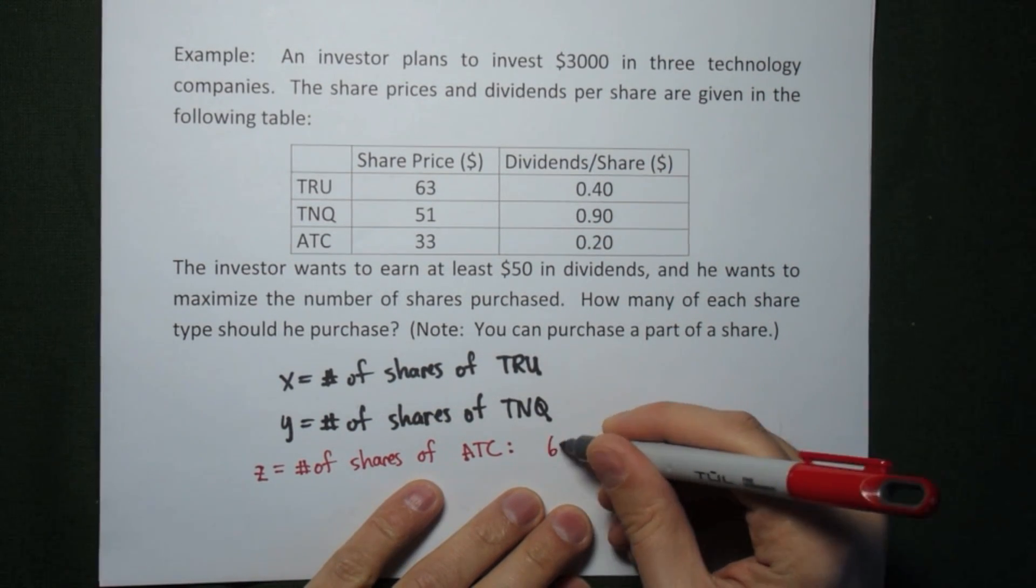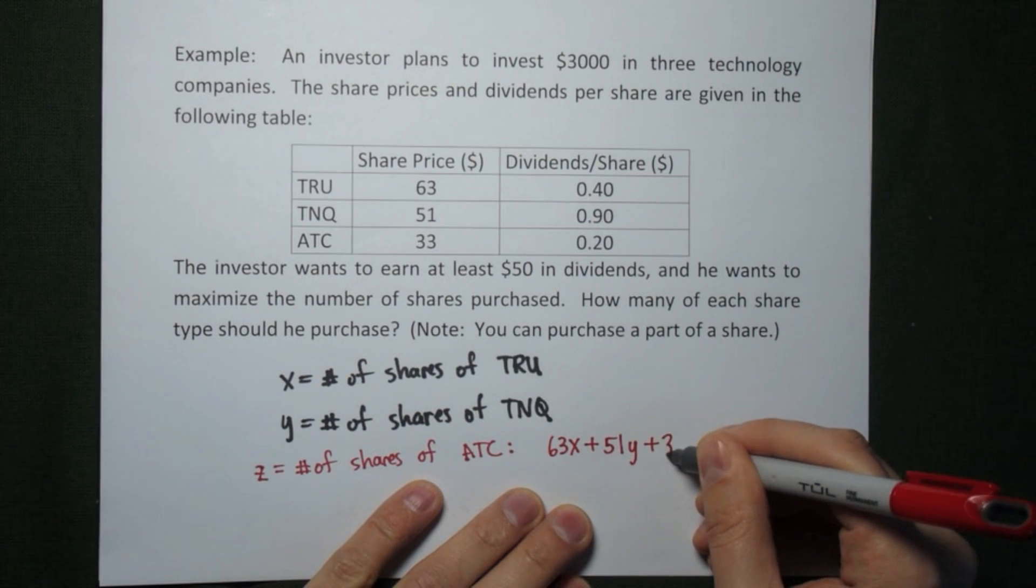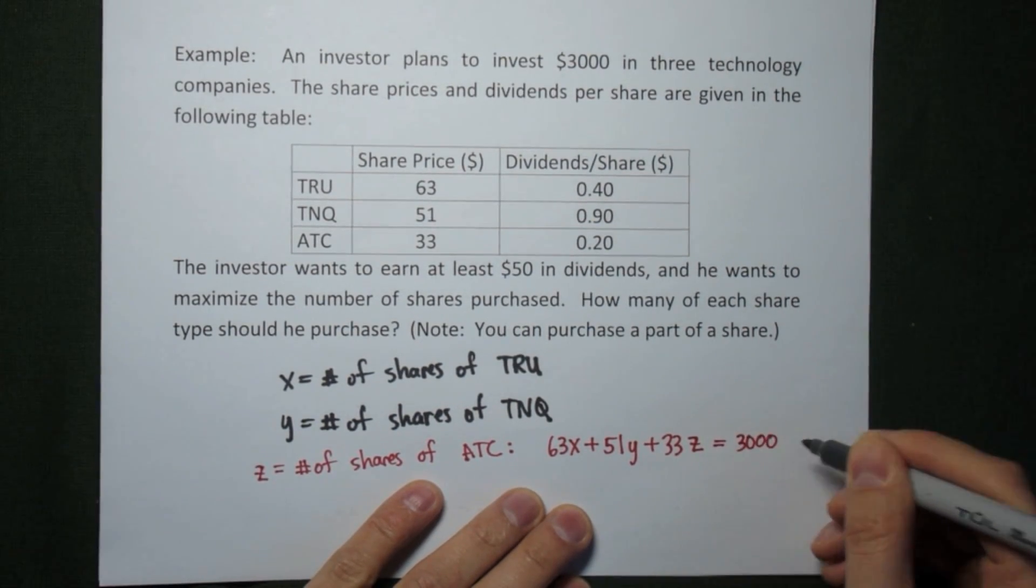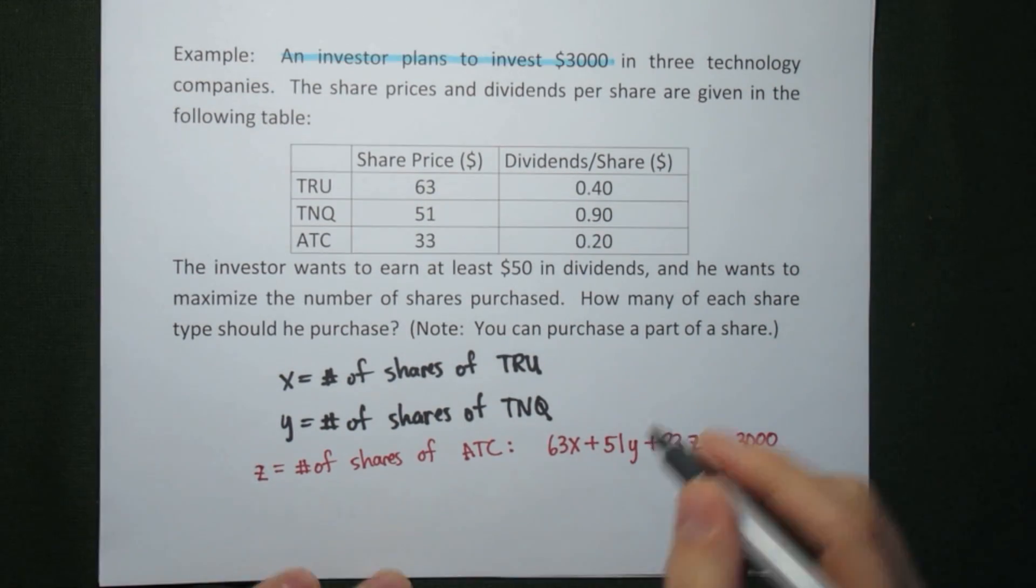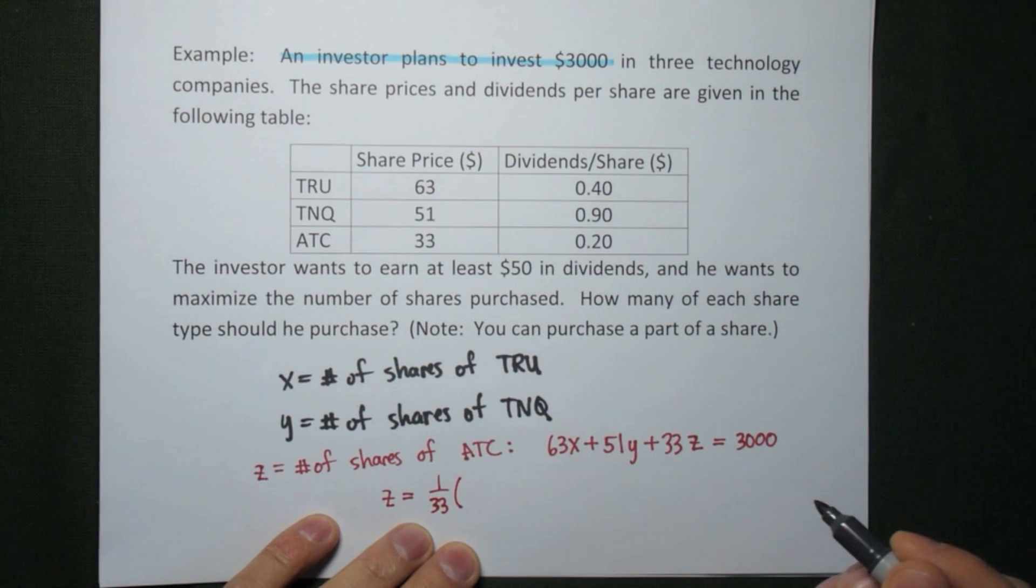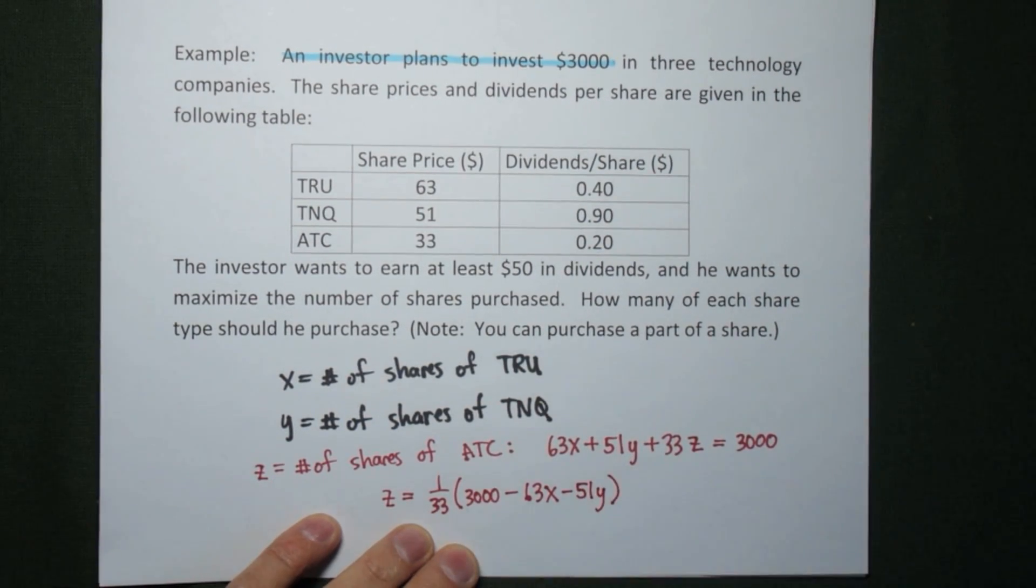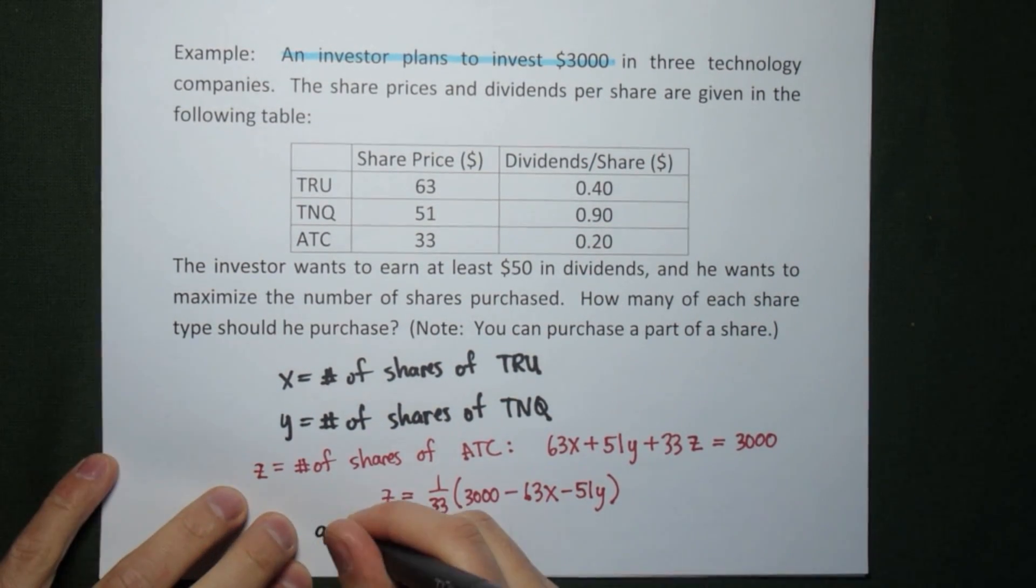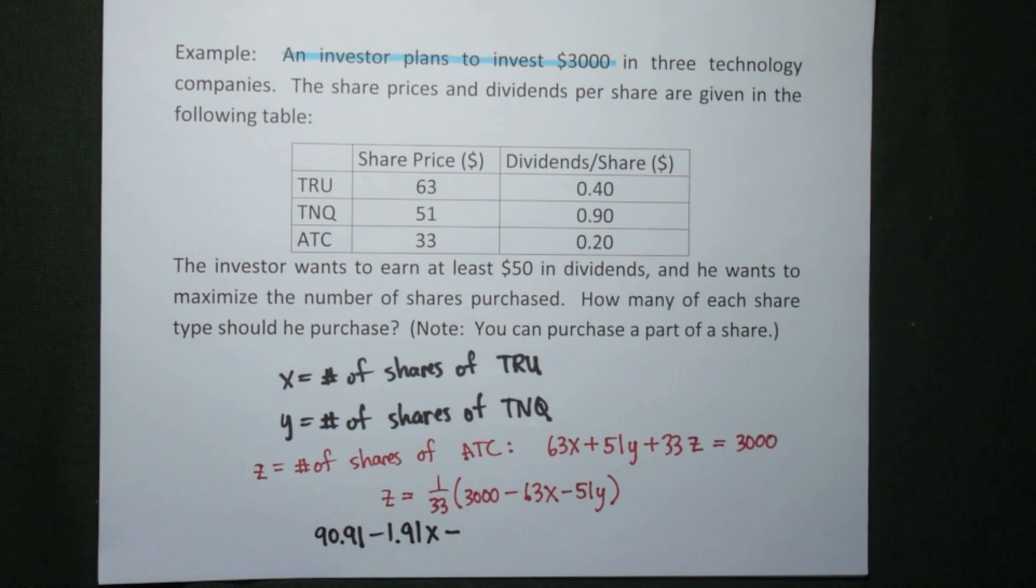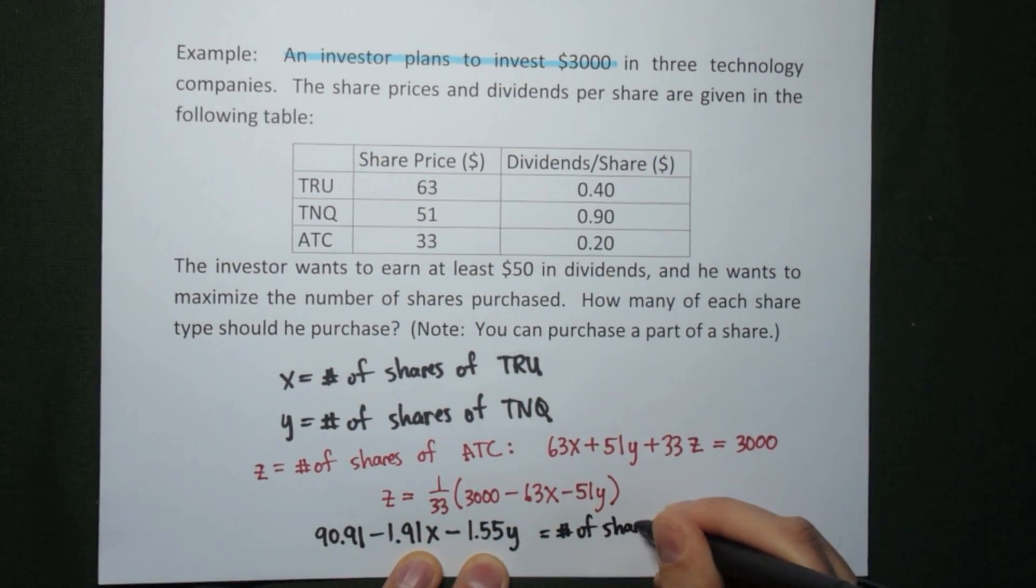So in this case, we're going to use the investment data, and that means the price times the amount of shares that we have, all added together, has to be the amount of money we want to invest. In other words, $3,000. And so, we take this, we solve it for z, and that's something you can all do. And z is 1/33 times 3,000 minus 63x minus 51y. Once we have this as our z, we simplify that just a little bit, and we get some sort of expression, in terms of both x and y, as our number of shares of ATC that we want to invest.